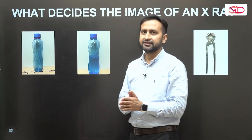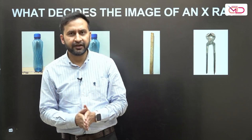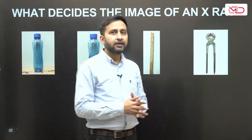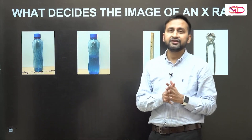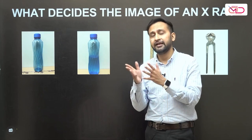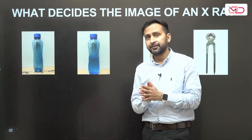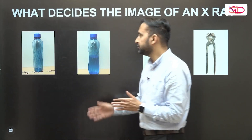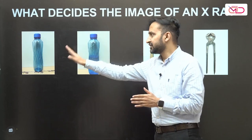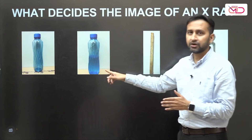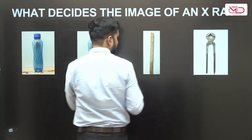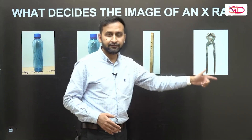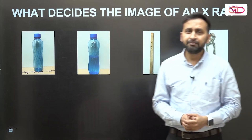Before that, all of us must have seen X-rays at some point in our lives. X-rays show varying shades of gray — some things appear white, some black, some gray. The first and most important question is: what decides the color of a particular element on an X-ray? To answer this, we did a simple experiment using four common items: an empty plastic water bottle, a plastic bottle half filled with water, a wooden stick, and a metal glass.